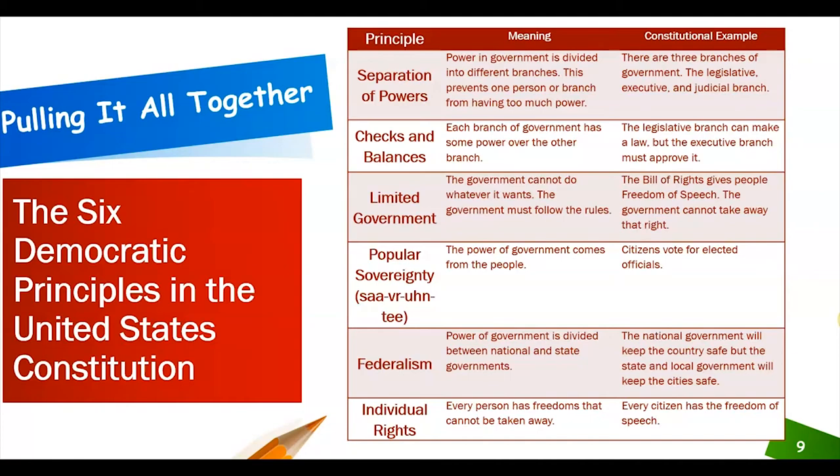Now that you have your notes after watching that video, we're going to look at our chart that has the meaning and a constitutional example — feel free to add more to your notes. Separation of powers: power in government is divided into different branches. This prevents one person or branch from having too much power. A constitutional example is there are three branches of government: the legislative, executive, and judicial branch.